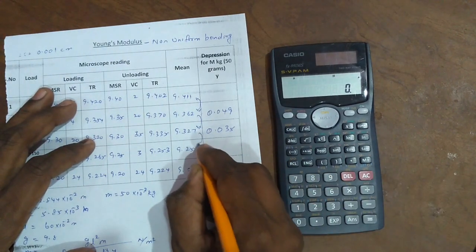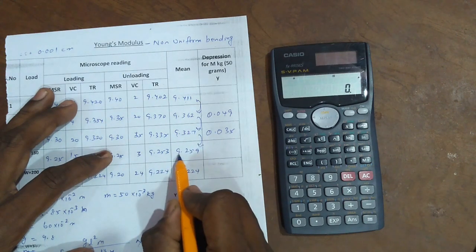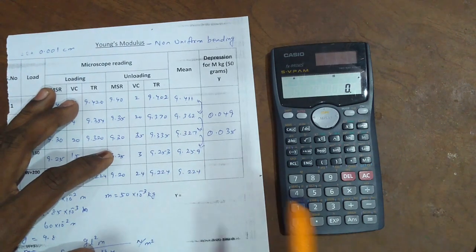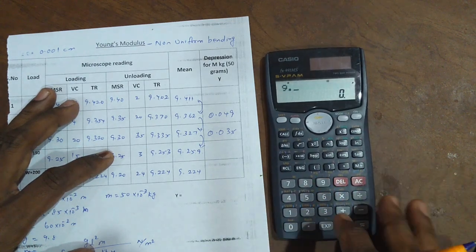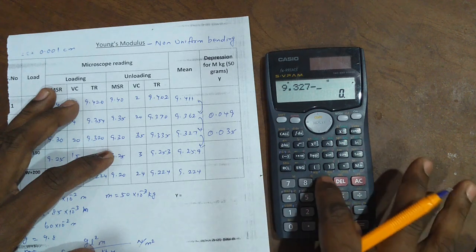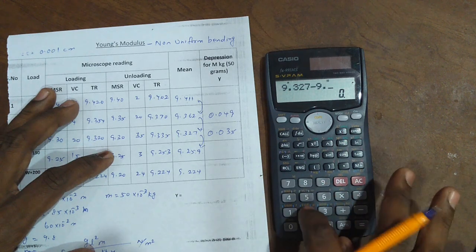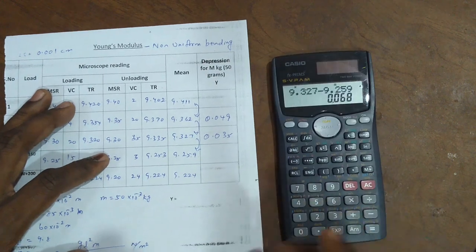Next, another depression: 9.327 minus 9.259. The answer is 0.068.